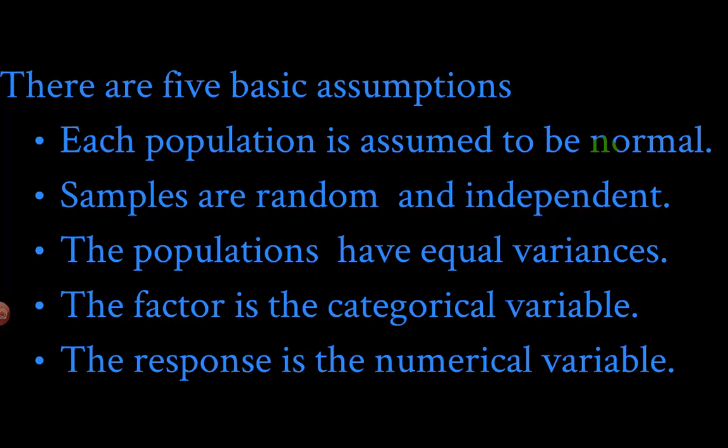There are five assumptions: that they're all normal, the samples are random and independent, the populations have equal variances, the factor is categorical, and the responses are numerical. So if we have yeses and nos we have to turn those into numbers because we need to be able to average stuff. We can only have numbers for this to work because obviously we're doing means and standard deviations. We have to be able to add these together and get a normal useful total.